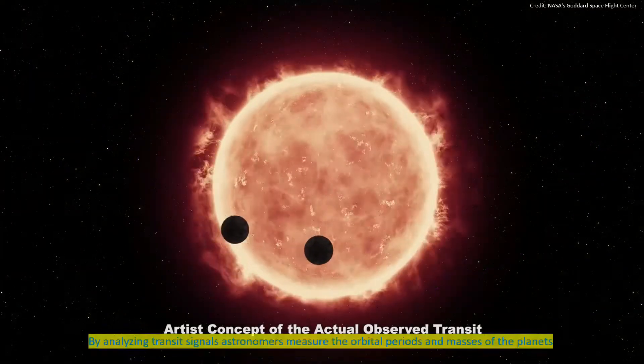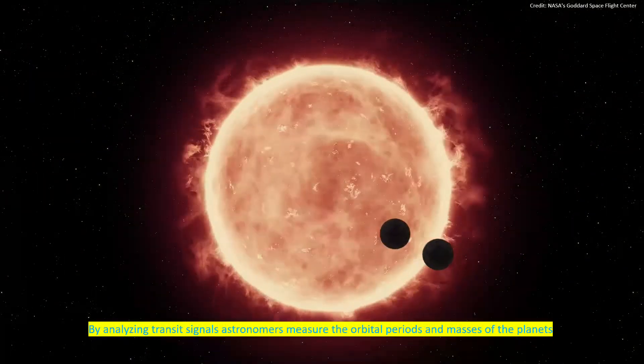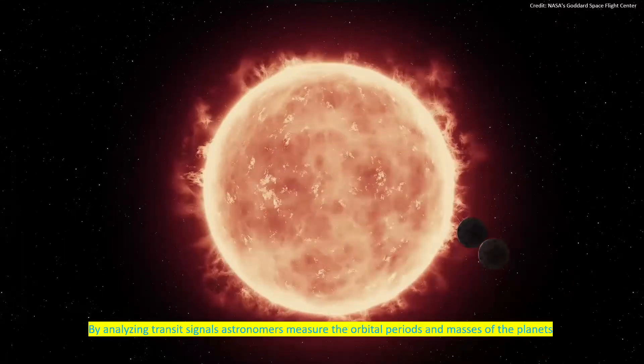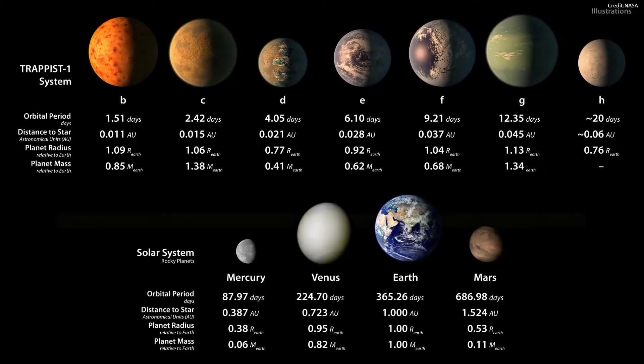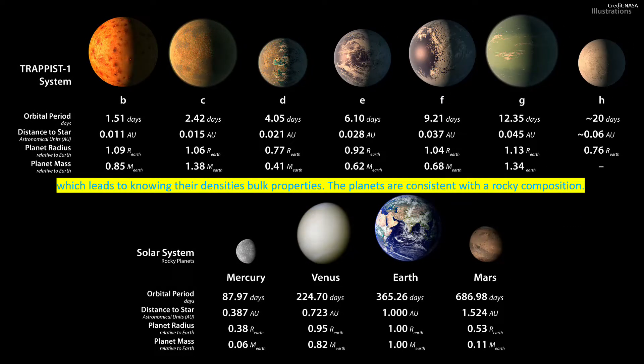By analyzing transit signals, astronomers measure the orbital periods and masses of the planets, which leads to knowing their densities and bulk properties. The planets are consistent with rocky composition.